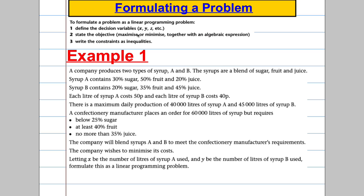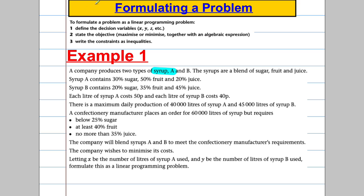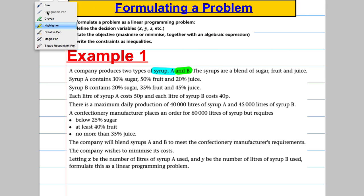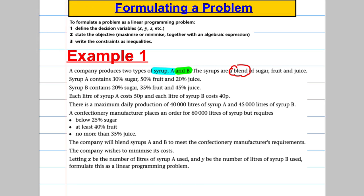A company produces two types of syrup: syrup A and syrup B. The syrups are a blend - and that's the key word that signals a more complicated problem. It's a blend of sugar, fruit, and juice. Syrup A contains 30% sugar, 50% fruit, and 20% juice. Each litre of syrup A costs 50p and each litre of syrup B costs 40p.